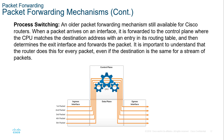Process switching is an older packet forwarding mechanism still available on most Cisco routers. When a router receives a packet on an interface, it is forwarded to the control plane where the CPU matches the destination address to an entry in the routing table, determines the appropriate egress interface, and forwards it. The router does this for every single packet, even if the destination is the same stream. The downside is that this is CPU intensive.